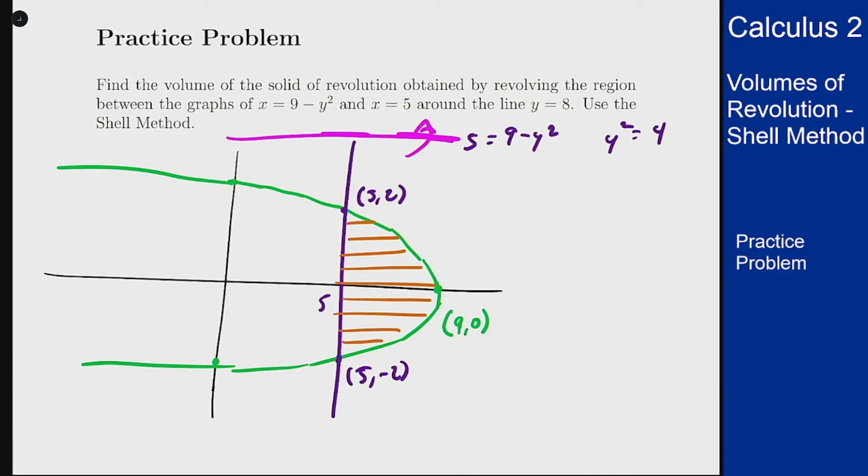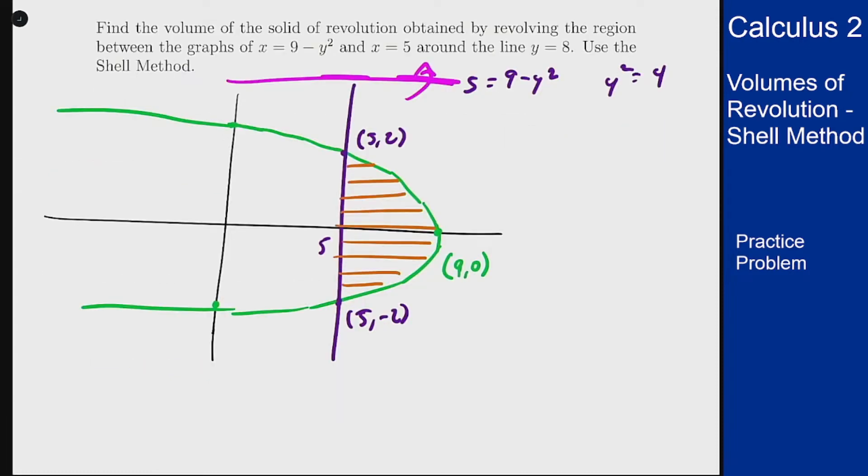So the shell method when we do the integral is always the integral over that certain range. And we need the radius of the shell and the height of the shell. Based on our orientation here and the rotation axis, we know these are going to be integrals in y because that's the way our slicing is set up.